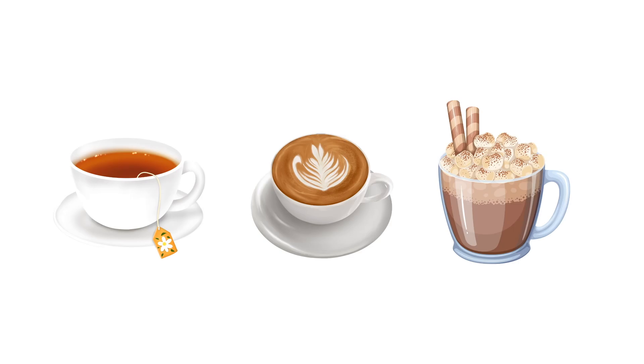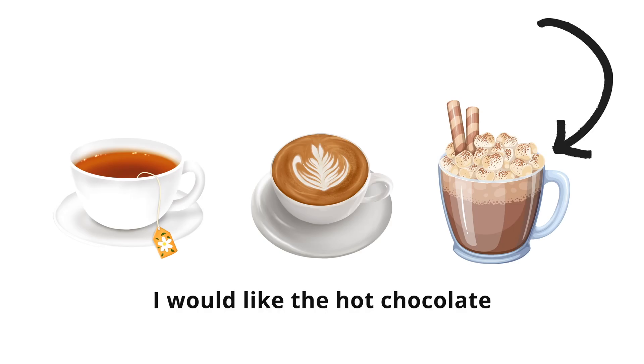The word 'the' is called a definite article. The reason it's called a definite article is because it refers to a specific thing. In English, there is only one definite article, which is 'the'.